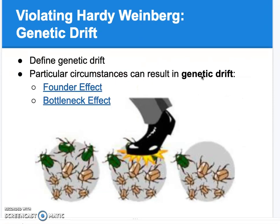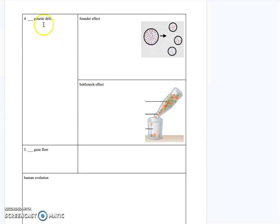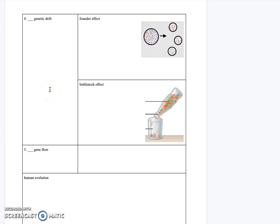Now let's look at another allele frequency changer: genetic drift. Genetic drift is when allele frequencies change due to a chance event — not because of fitness, just by chance. A smaller population is going to have different allele frequencies as a result. Let's look at two examples of what results from genetic drift.